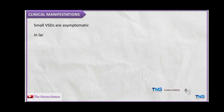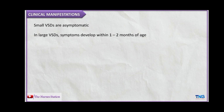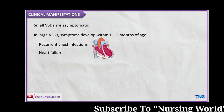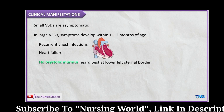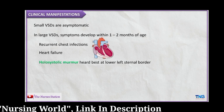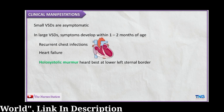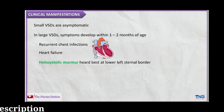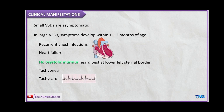Small VSDs are asymptomatic, but symptoms due to large VSDs develop within one to two months of age and include recurrent chest infections, heart failure, holosystolic murmur heard best at the lower left sternal border, tachypnea (abnormally rapid breathing), tachycardia (abnormally rapid heartbeat), and exertional dyspnea.